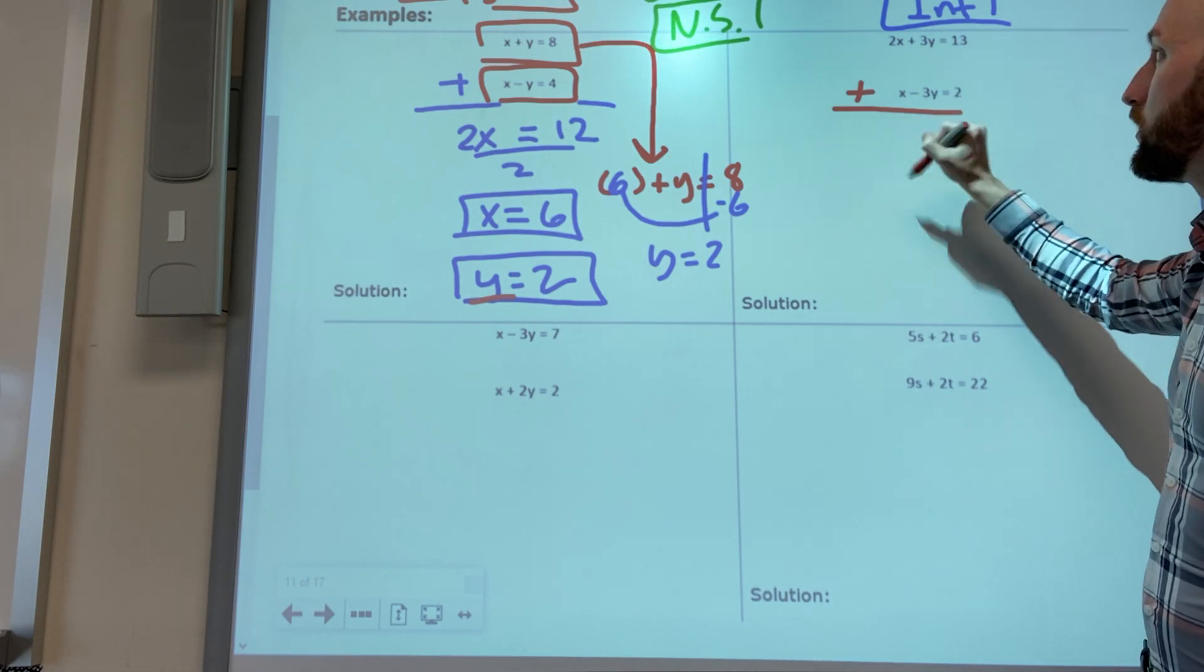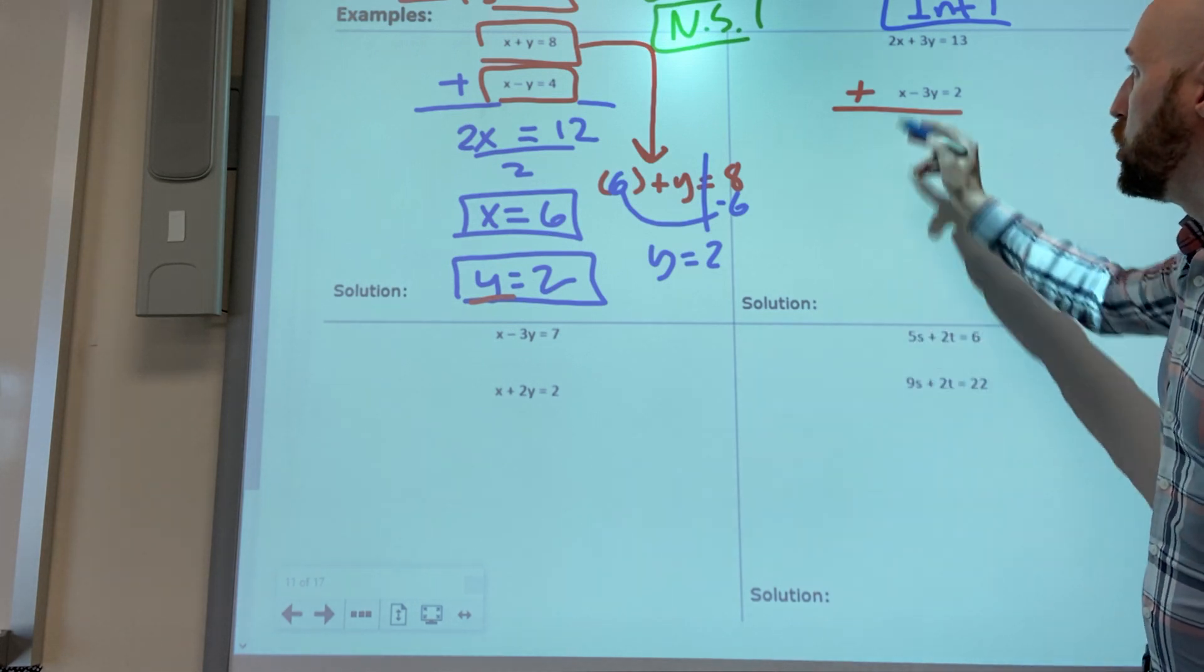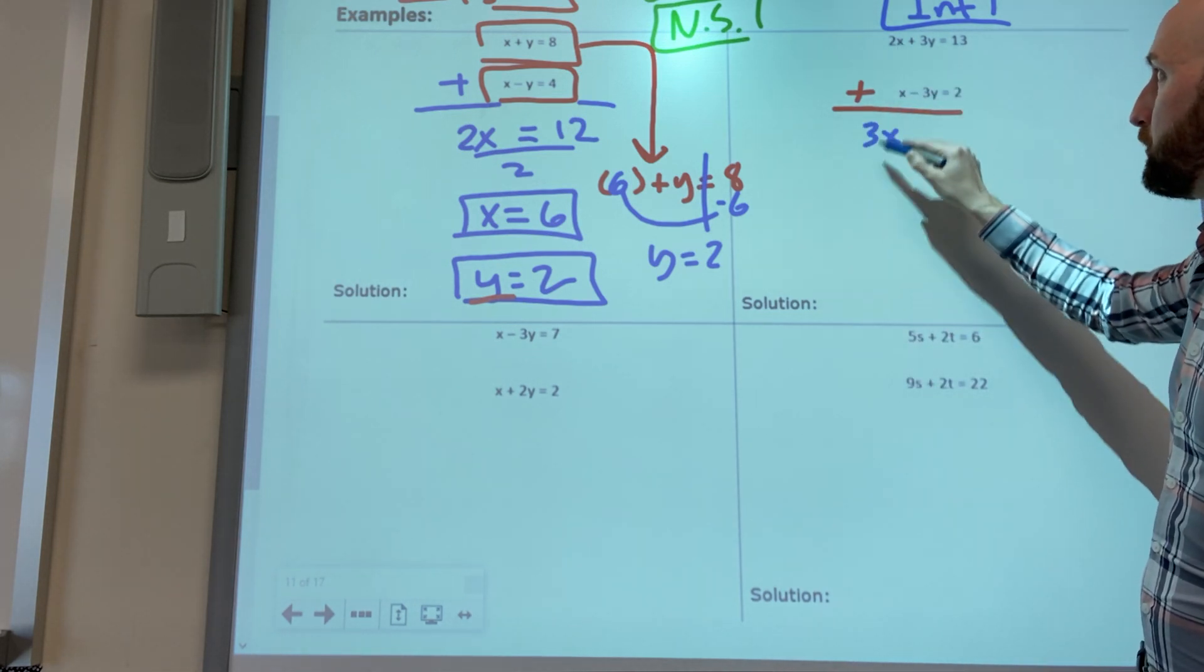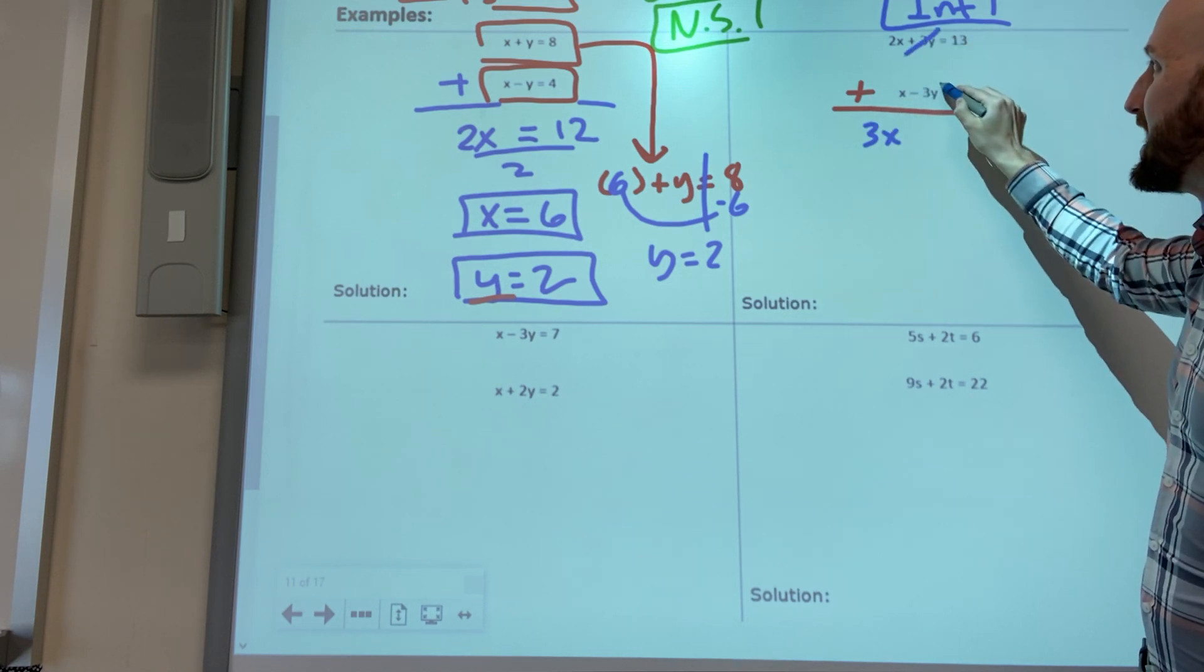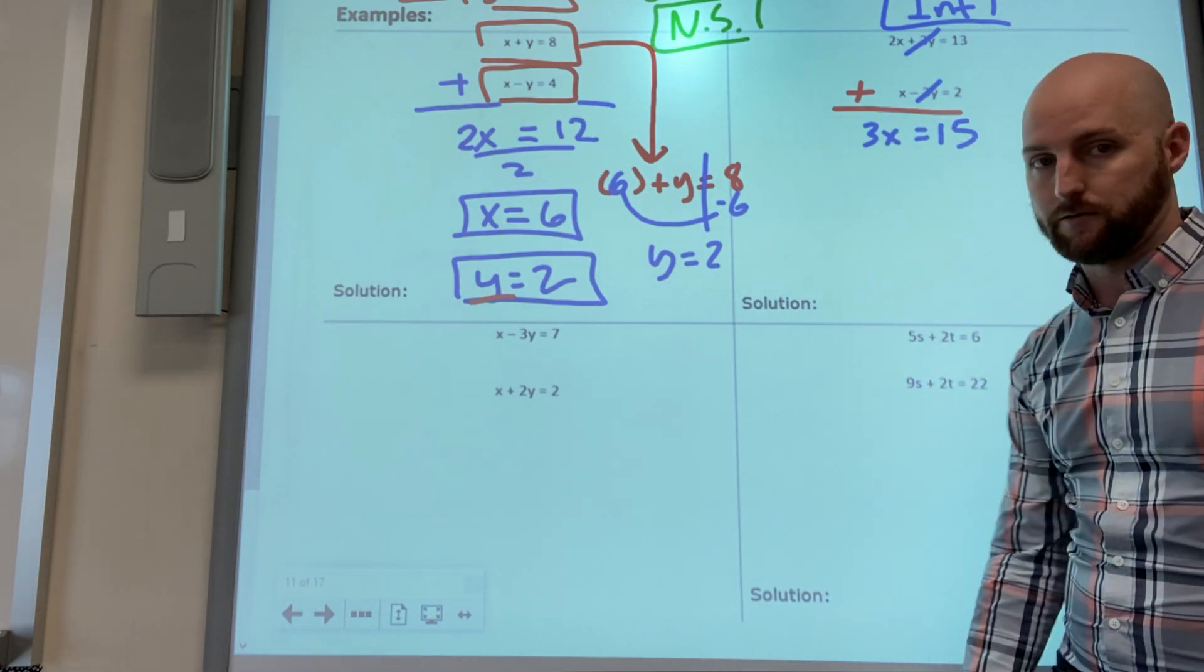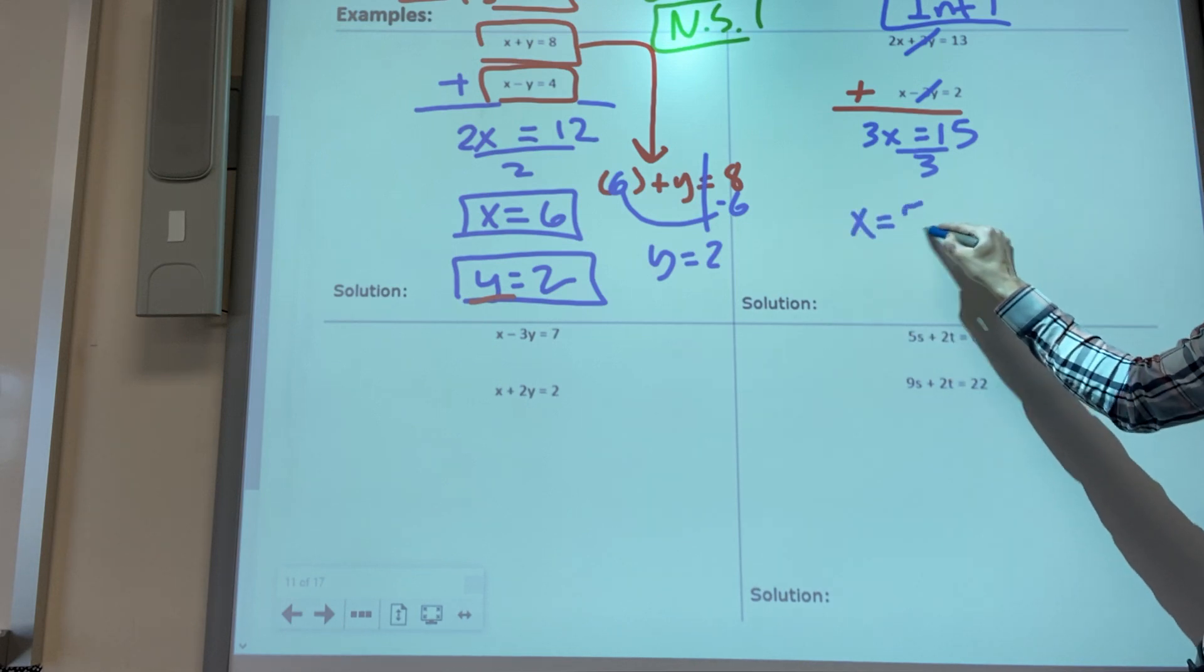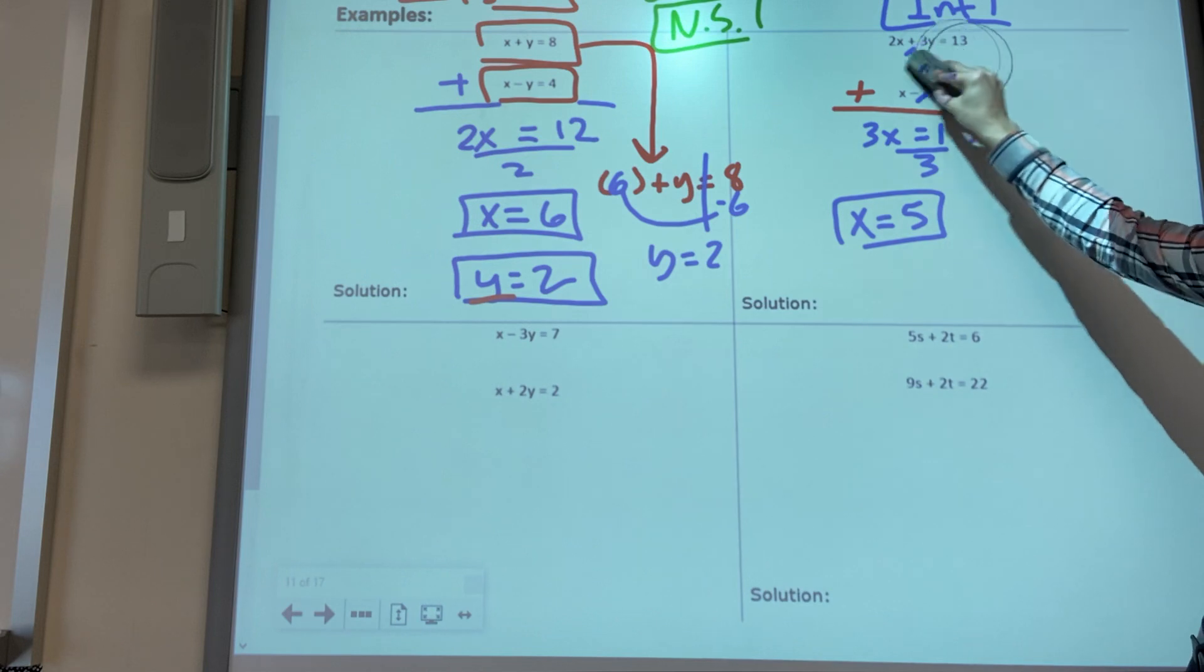Let's find the answer. Two x plus one x is three x, three y plus negative three y elimination, 13 plus two is 15, divide by three, x equals five.